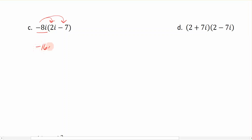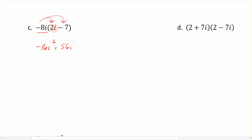That gives us negative 16 i squared. Now we multiply negative 8 times negative 7, because those are the same type of term, and we get positive 56i. When you multiply imaginary numbers, look what happened in this first term: I got an i times an i, which is i squared. We know from the definition of imaginary numbers that i squared equals negative 1, so this is the same as negative 16 times negative 1, which is just 16. The second part we leave as 56i. So the i squareds disappear, but we end up changing the sign of that value.